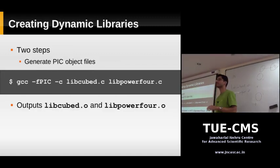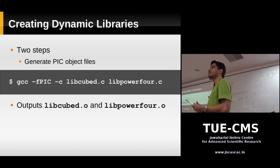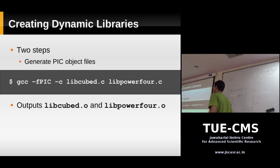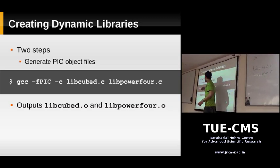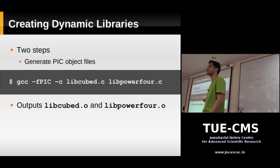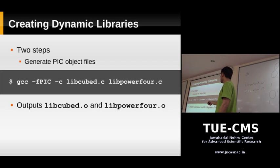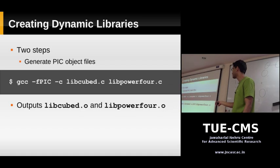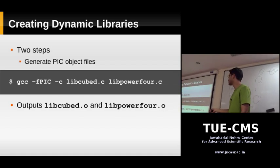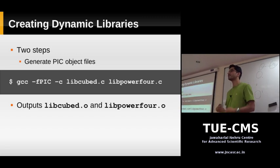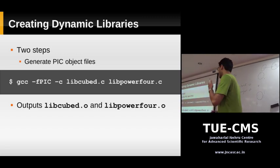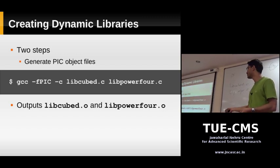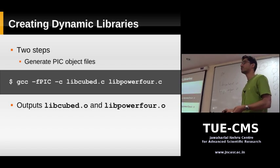The first stage for creating a dynamic library is you need to generate something called position-independent code — PIC. You pass the -fPIC option to GCC. The GCC command is the same as for generating object code — gcc -c libcube.c libpower4.c — but with the -fPIC option added. This option produces position-independent code. The output is the same: you get libcube.o and libpower4.o.